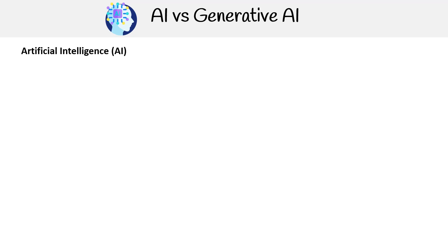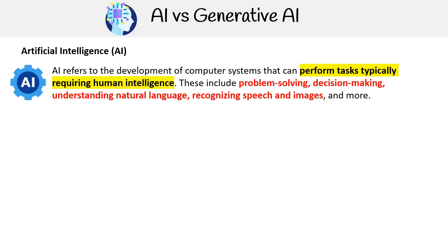First, let's compare the differences between regular AI versus generative AI. AI refers to the development of computer systems that can perform tasks typically requiring human intelligence. These include problem solving, decision making, understanding natural language, recognizing speech and images, and more.